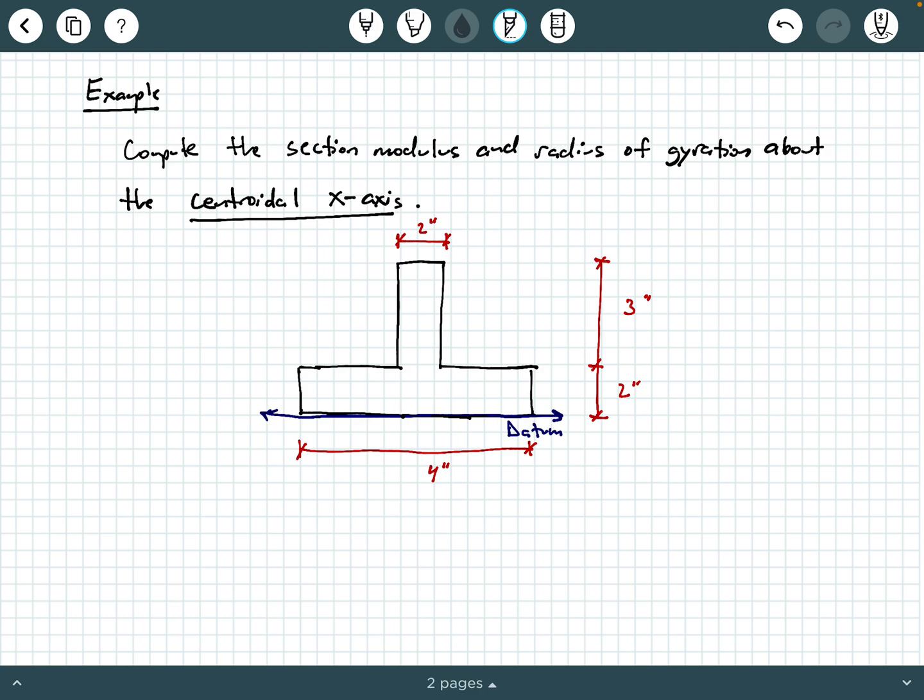We can think of this datum here in blue as our global x-axis. The stem here, or sometimes called the web, has a thickness of 2 inches and a height of 3 inches. And then, this bottom flange of the T here has a total width of 4 inches and a height of 2 inches. So, let's go ahead and get started.